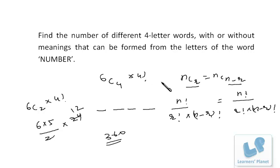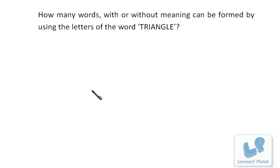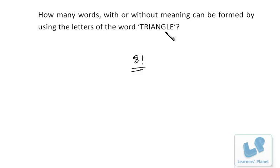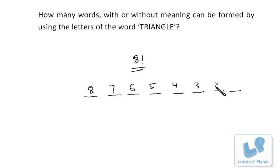It is actually a permutation, but instead of using that term, I am selecting the objects and then arranging them. Now, the next problem: how many words with or without meaning can be formed using the letters of the word TRIANGLE? There are eight letters in this word and we have to use all of them. So eight letters are to be arranged at eight places, meaning eight factorial ways. At the first place there are 8 choices, then 7, 6, 5, 4, 3, 2, 1 — that is eight factorial.